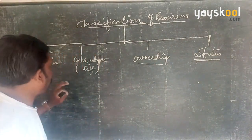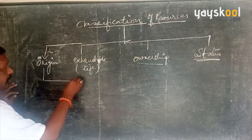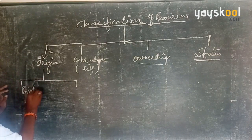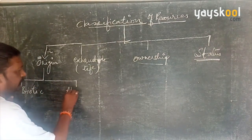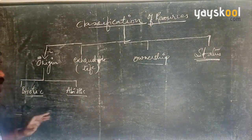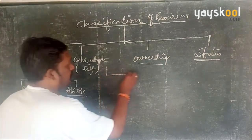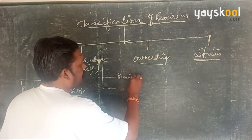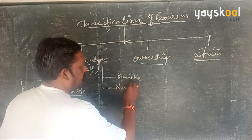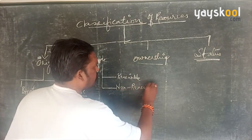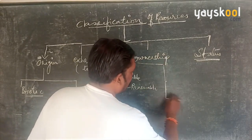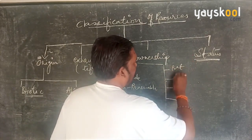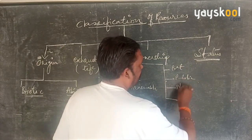On the basis of origin, resources are divided into two parts: biotic and abiotic. This is a sure exam question — 100% certainty. On the basis of exhaustibility, resources are classified into two parts: renewable and non-renewable. On the basis of ownership, resources are classified into four types: private, community or public, national, and international.